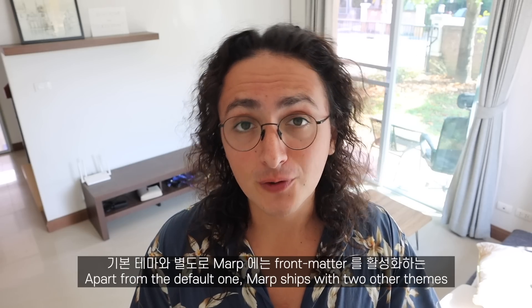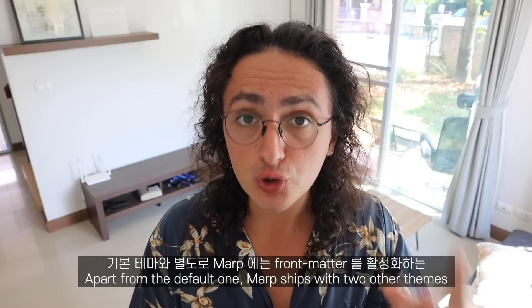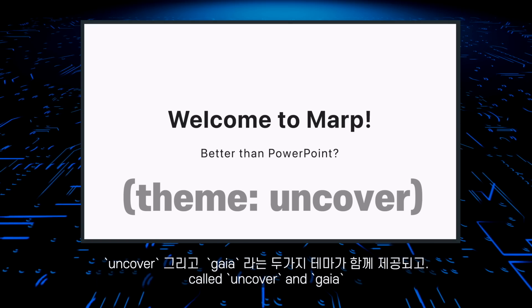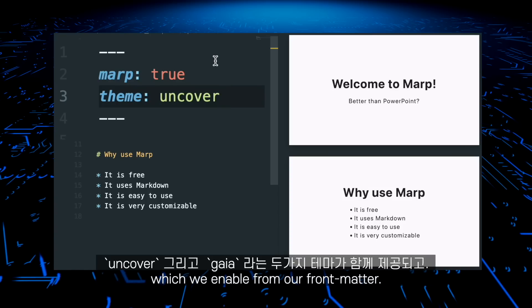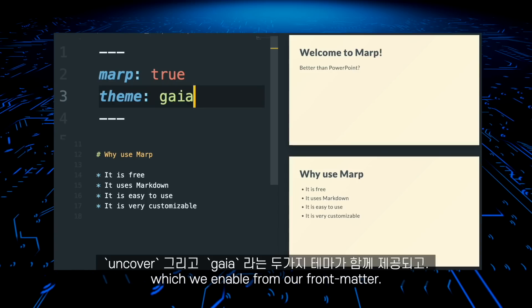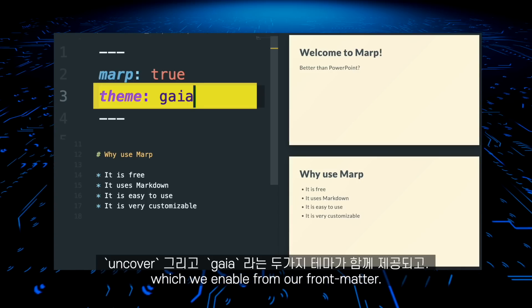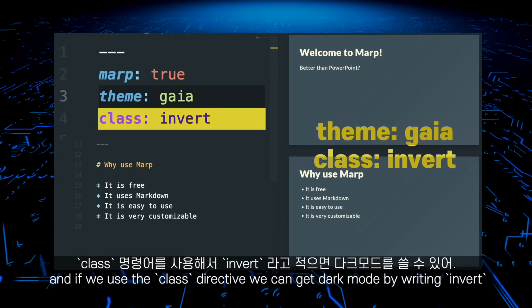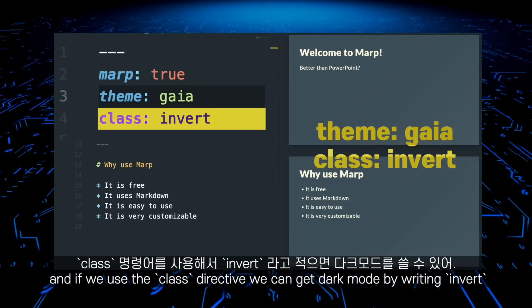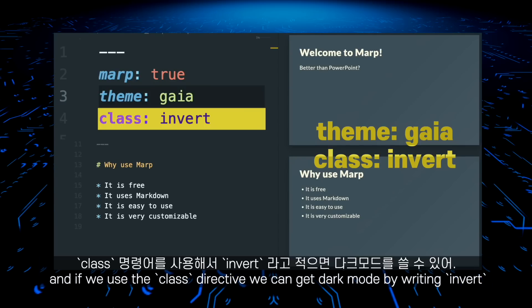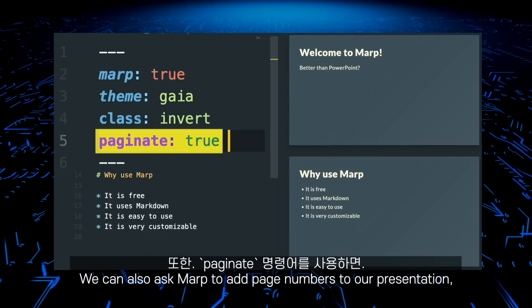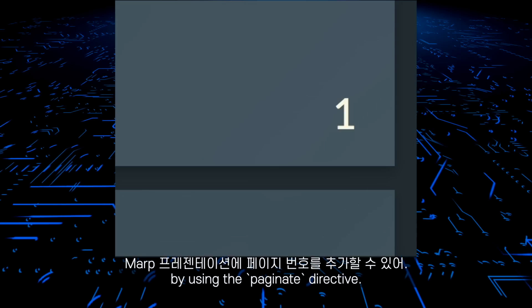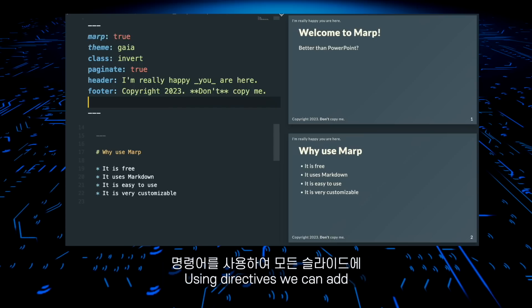Apart from the default one, MARP ships with two other themes called OnCover and Gaia, which we can enable from our front matter. And if we use the class directive, we can get dark mode by writing 'invert'. We can also ask MARP to add page numbers to our presentation by using the Paginate Directive.